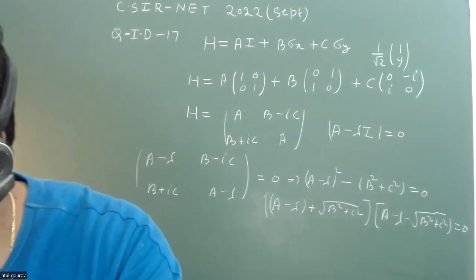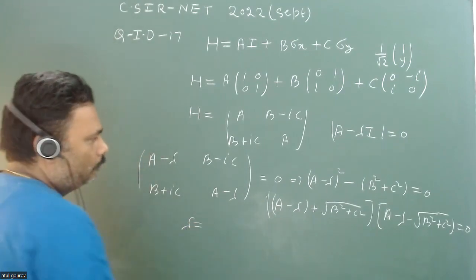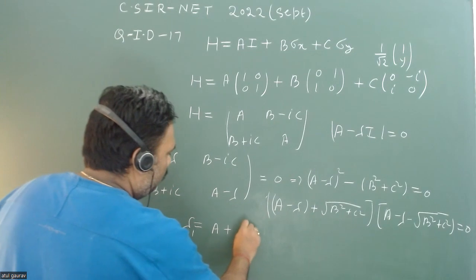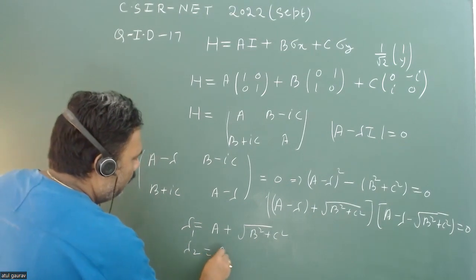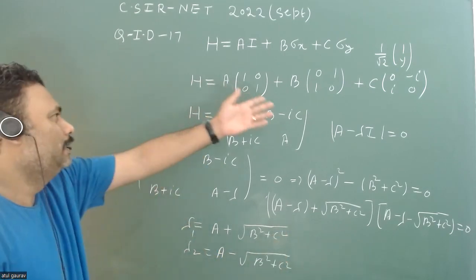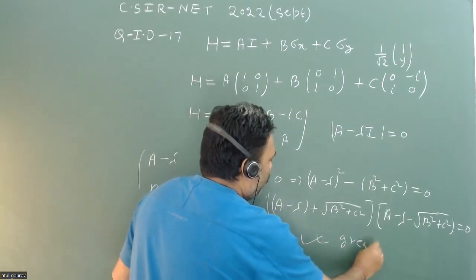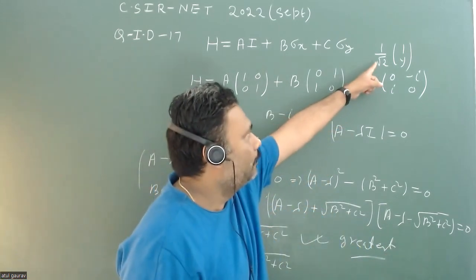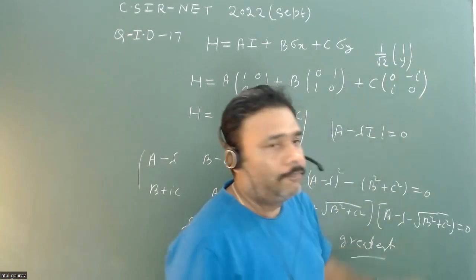From the characteristic equation, we get two eigenvalues: λ₁ = a + √(b²+c²) and λ₂ = a - √(b²+c²). Since a, b, c are given positive constants, λ₁ = a + √(b²+c²) is the greatest eigenvalue. The given vector must be the eigenvector corresponding to this eigenvalue, and we need to find y.